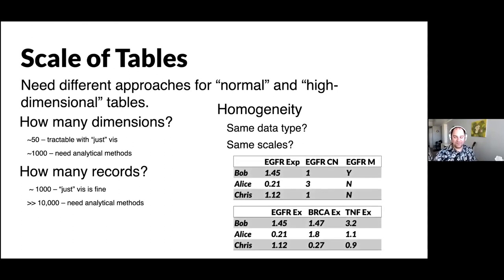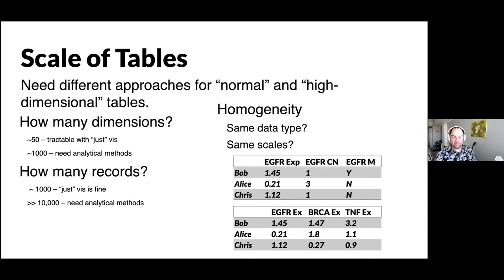Homogeneity matters for picking the right tabular visualization technique. An example of a heterogeneous table has three different data types for one gene — gene expression, copy number status, and mutation presence — which requires a very different visualization than a homogeneous table showing the same data type on the same scale across multiple genes like EGFR, BRCA, and TNF across different patients.